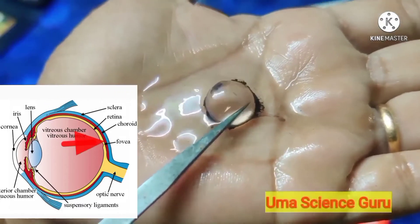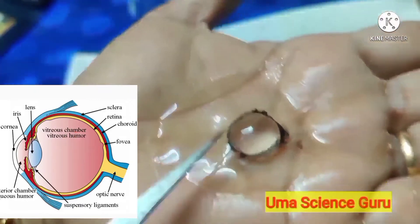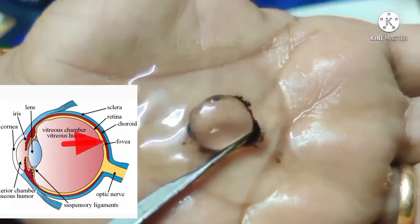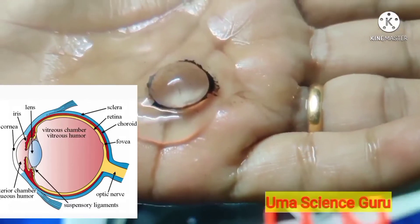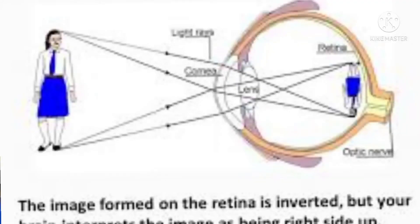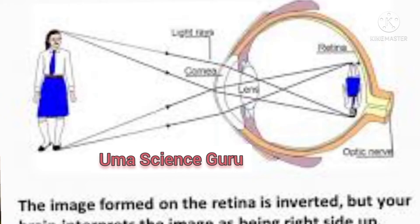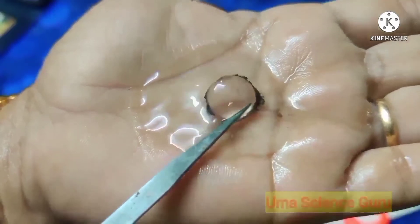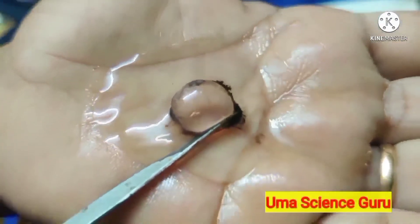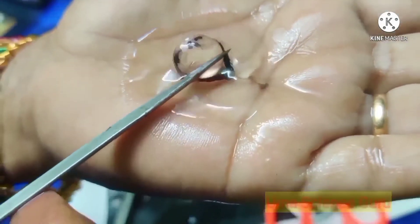By the action of ciliary muscles, the lens changes its shape to focus light on the retina. It becomes thinner to focus on distant objects and thicker to focus on nearby objects. Light traveling from an object passes through the cornea and pupil and is focused by the lens onto the retina, where an image of the object is formed. The image formed on the retina is smaller than the object and is upside down.